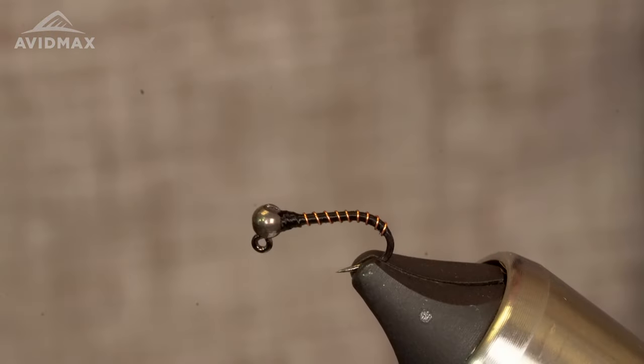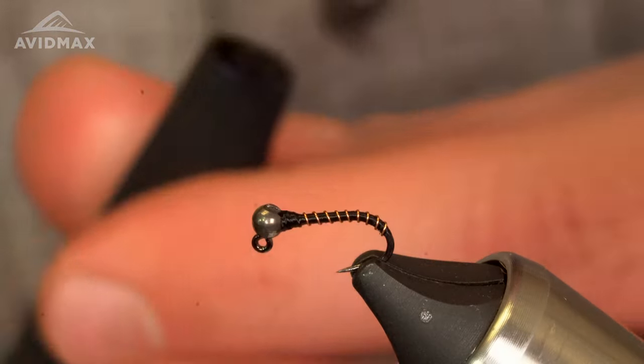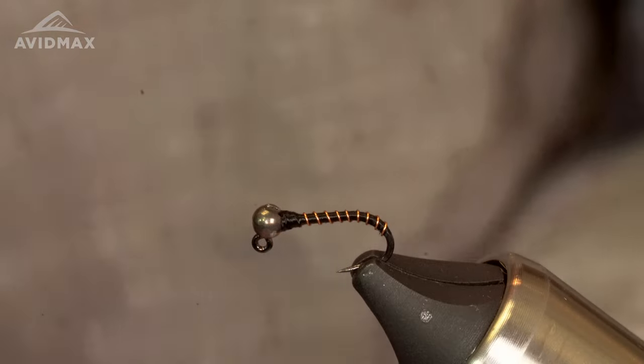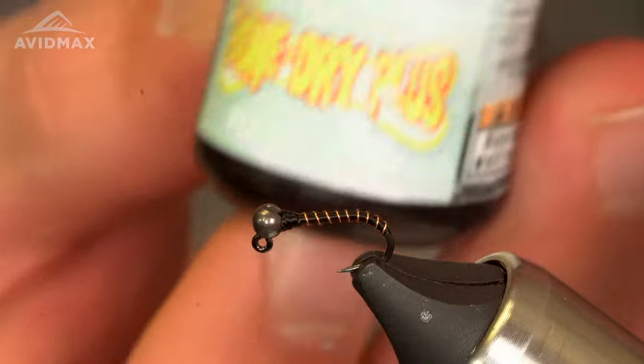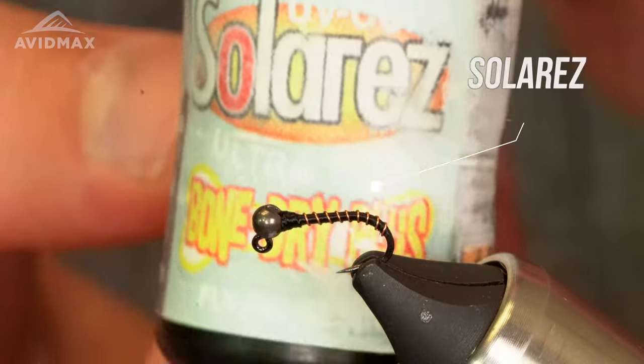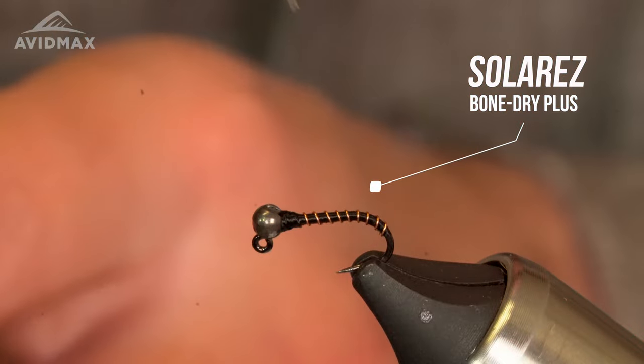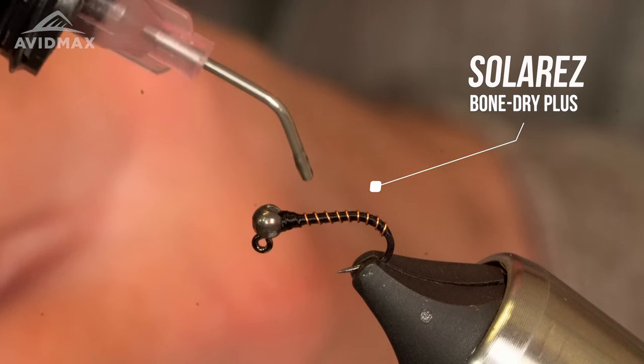You could leave it just like this, but for a little extra security, extra durability, a little profile enhancement, we'll go with Solarez Bone Dry Plus. It's the good stuff. For all your parachutes, this is the one you want.